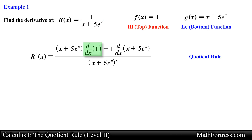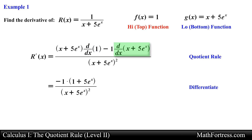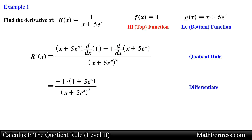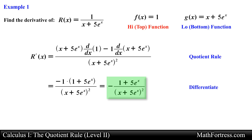Here, the derivative of a constant is just equal to 0 and the derivative of our low function is going to be equal to the following expression. Resulting in the final derivative equal to negative times the quantity 1 plus 5 times e to the x, over the quantity x plus 5 times e to the x, squared.